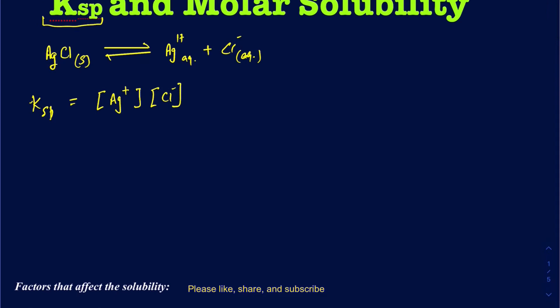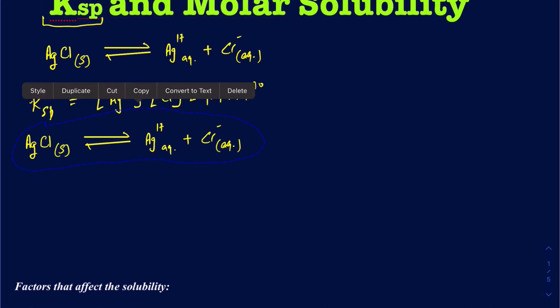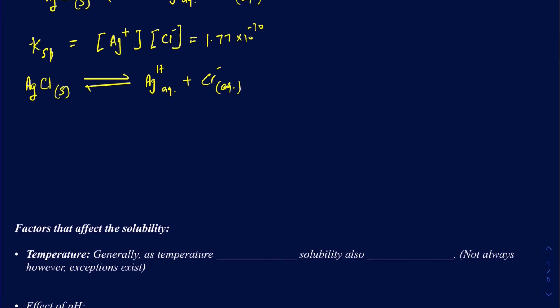A lot of the time you're going to be given the Ksp value. The Ksp value for silver chloride happens to be 1.77×10⁻¹⁰. If you know the Ksp value, you can calculate the molar solubility. When figuring out how much Ag⁺ and Cl⁻ you're going to be making once AgCl dissolves in the water, you can say there's a 1-to-1 mole ratio of both silver(I) and chloride. So write X for each — X represents your molar solubility, and these X values will also be the concentrations of Ag⁺ and Cl⁻.